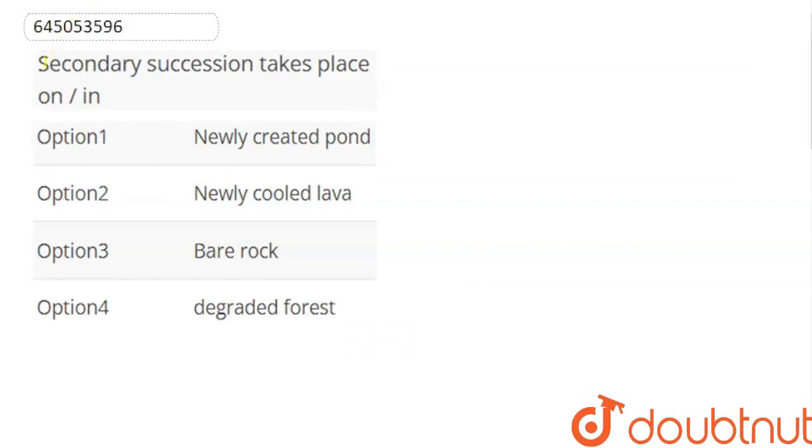So, if we have the question: secondary succession takes place on or in. Option 1: newly created pond. Option 2: newly cooled lava. Option 3: bare rock. And option 4: degraded forest.